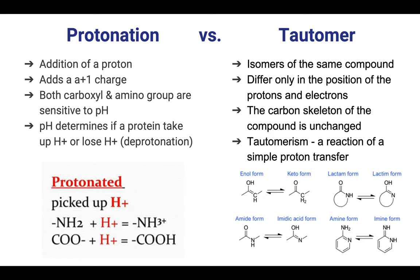Protonation means the addition of a proton, acting as a +1 charge. Both carboxyl and amino groups are sensitive to pH, which determines if a protein picks up or loses H+. Losing H+ is called deprotonation. Tautomers are isomers of the same compound — from the same molecular formula but differing in orientation or structure, such as the enol and keto forms, or the lactam and lactim forms.